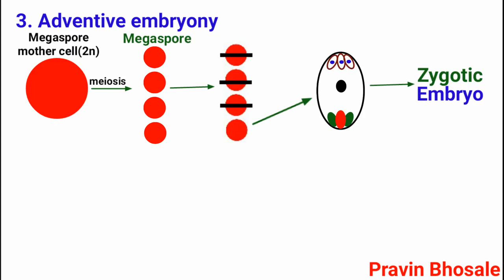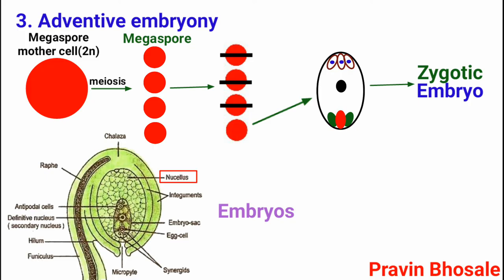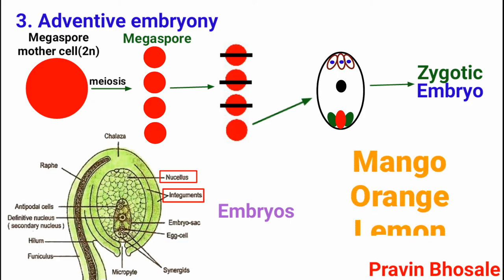In adventive embryony, a normal zygotic embryo is formed, but along with it, embryos may also develop from somatic nucellus or integument cells. It is common in mango, orange, and lemon. This gives rise to a condition called polyembryony, meaning development of more than one embryo inside the seed.